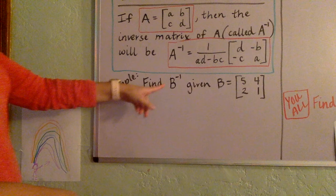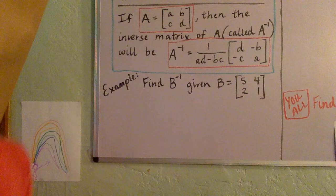Let's work through a couple of examples here. Let's start with this one. So we want to find B inverse matrix if we're going to start out with 5, 4, 2, 1. All right, so here we go.